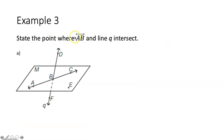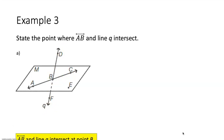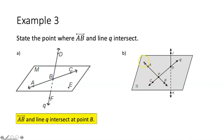Example three says state the point where line AB and line Q intersect. Line AB goes through those two points. Line Q has a little lowercase Q at the end, and we could refer to it as line DB, BD, DF, FD, FB, or BF. Line AB and line Q intersect at point B. Part B: line AB and line Q — which has a little lowercase Q at the end — intersect at point P.